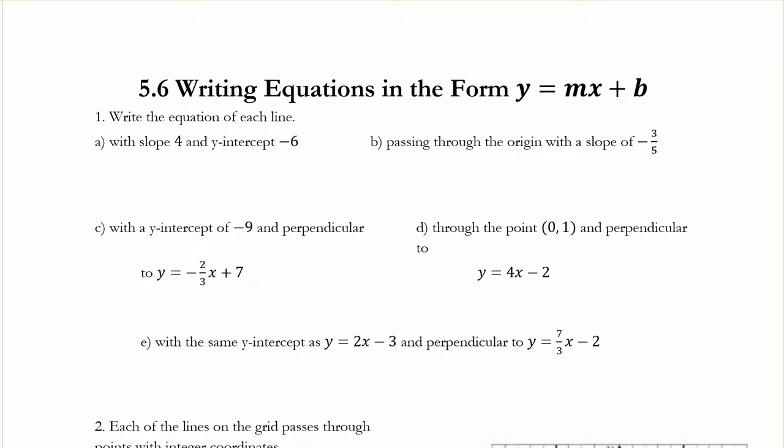Okay, so 5.6, writing equations in the form, like we just talked about, y is equal to mx plus b. It says write the equation of each line, so slope of 4, y-intercept of negative 6. I'm going to let you guys do that because we did a few of those.